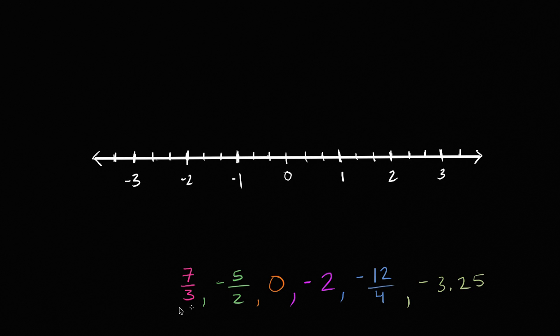So the first number here, we have 7 thirds. Let's see if we can express that in a different way, if we can write that as a mixed number. So 7 thirds, how many wholes are here? And a whole is going to be 3 thirds. So this is going to be 3 thirds plus another 3 thirds is going to get us to 6 thirds, and so you're going to have one more third left. So this is 7 thirds. Three plus three plus one is seven. So 3 thirds is one whole, 3 thirds is one whole, so this is 2 and 1 third.